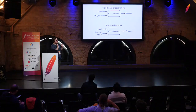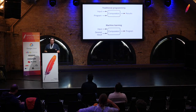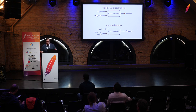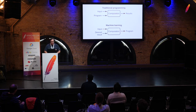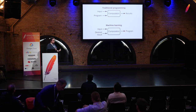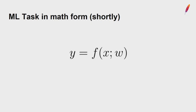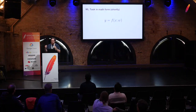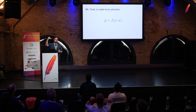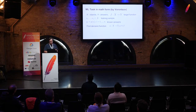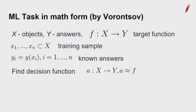I will talk about traditional programming versus machine learning. The usual program a programmer writes resembles a finite state machine and consists of a strict set of instructions. In machine learning, we have the opposite situation — we need to generate computations, the model. An ML task can be described as a search for the best set of parameters for an unknown function f, where x is a set of objects, y is a set of answers, and f is an unknown relation between objects and answers.